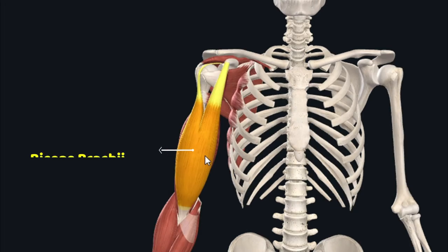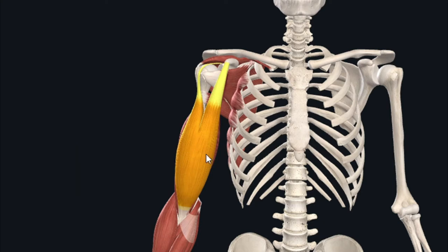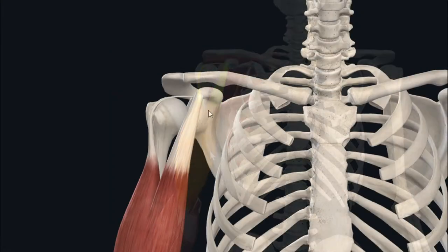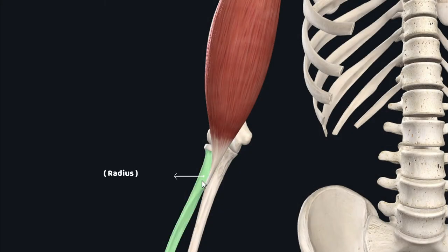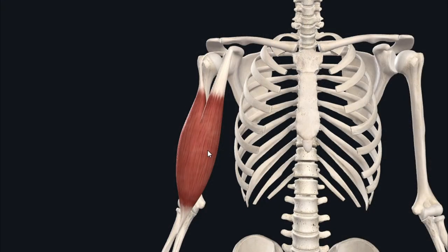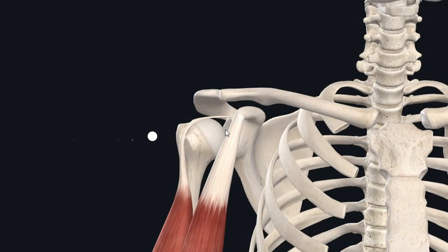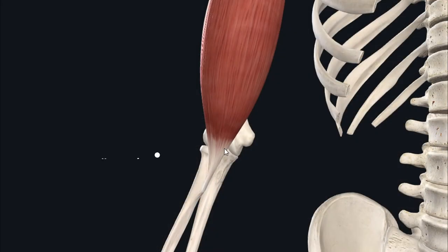The biceps brachii is the most superficial muscle of the anterior compartment of the arm. This muscle travels from the scapula superiorly to the proximal forearm inferiorly. The biceps brachii is known as a biarticular muscle because it travels across two joints: the shoulder or glenohumeral joint, and the elbow joint.